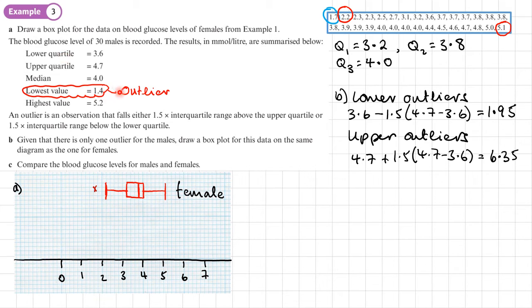Now we're going to transfer this information with the outlier onto this grid. First, this lower outlier, we're going to mark with a cross on 1.4. So now these are the other values plotted on here: 3.6 for the lower quartile, 4 for the median, 4.7 for the upper quartile, and then the highest value is 5.2.